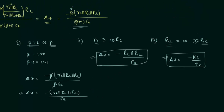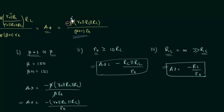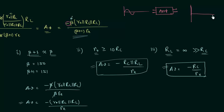Now we will discuss the negative sign in the voltage gain expression. This negative sign represents a 180-degree phase shift between the output voltage and the input voltage. So if a sinusoidal input voltage is fed to the amplifier, the amplified output voltage will have a 180-degree phase shift relative to the input voltage.